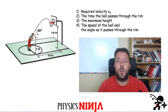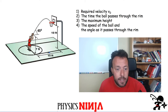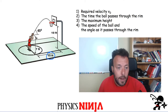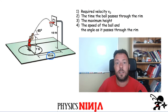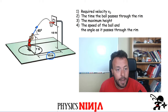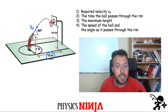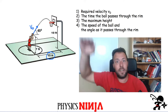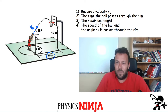Hi everybody, Physics Ninja here. Today we're going to look at a projectile motion problem involving a basketball player shooting a free throw. The player stands 15 feet away from the rim, and as he holds the ball above his head it starts at 7 feet above the ground. The ball is launched at 45 degrees, and the basket is 15 feet away and 10 feet above the ground for regulation size.